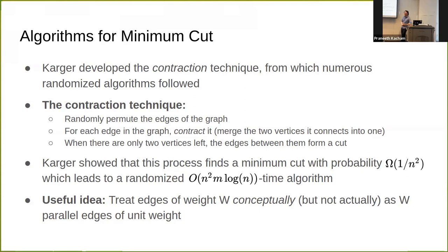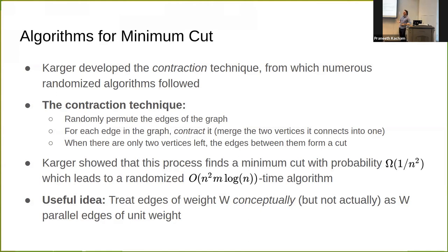There's a useful conceptual idea that pops up here: the distinction between weighted and unweighted graphs. It's useful in analysis to consider a weight-w edge and pretend it's actually w unweighted edges. You don't actually do this in implementation because it would blow up the size of your graph, but it turns out to be a handy conceptual trick for analysis. When you permute the edges, the permutation is biased by the weights — a higher weight edge is more likely to end up at the front. This way of thinking often helps with the analysis.